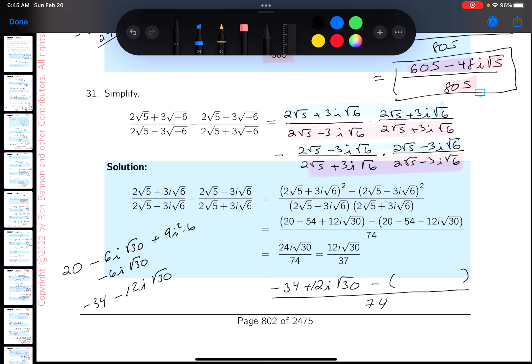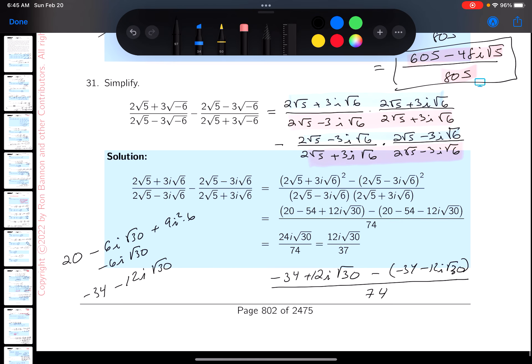I'll write that down now. So minus 34, minus 12i root 30. Well, I've got to do the arithmetic now. What do you get? Equals 74. Let's see. It looks like the minus 34 disappears. And then you get 24i root 30.